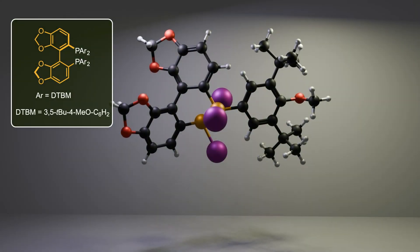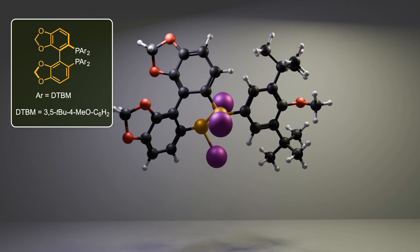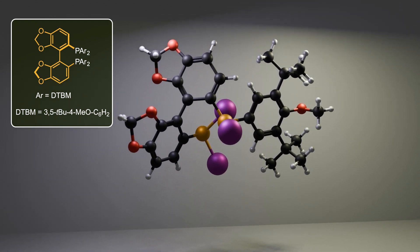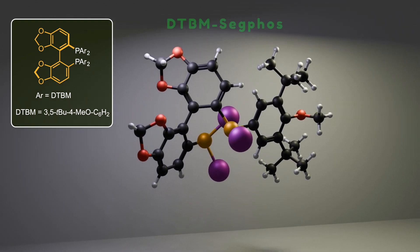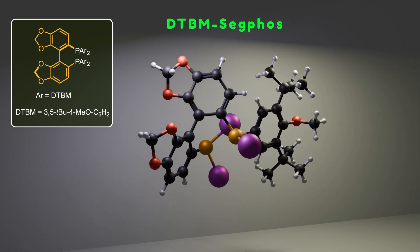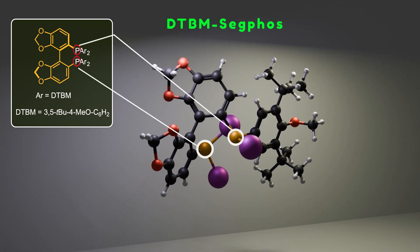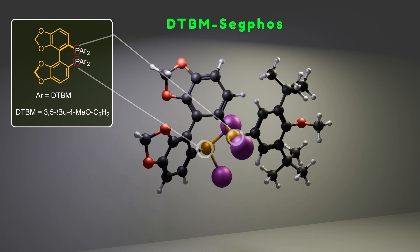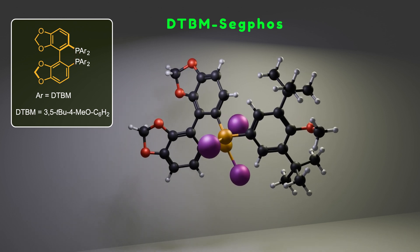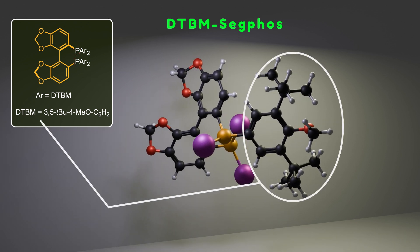Now look at the ligand used in this enantioselective reaction. In this ligand, two phosphorus centers are attached to the biphenyl skeleton, along with DTBM substituents which play a crucial role in the enantioselectivity of the reaction. To simplify, I indicate only one of the bulky DTBM substituents and represent the remaining substituents with purple spheres.